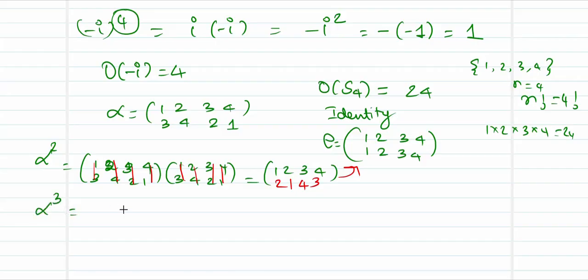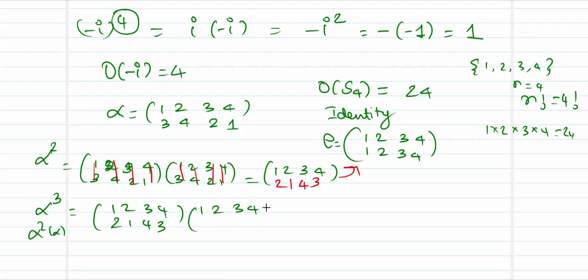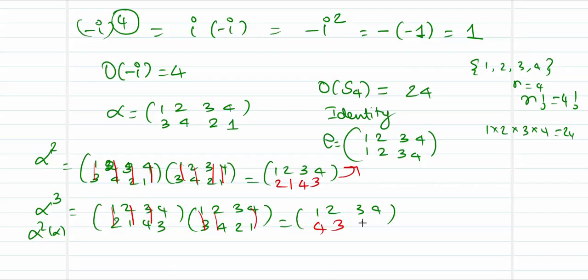α³ = α² composed with α. α² maps (1,2,3,4) to (2,1,4,3). Composing with α — (1,2,3,4)→(3,4,2,1): 1→2→4, 2→1→3, 3→4→1, 4→3→2. So α³ maps (1,2,3,4) to (4,3,1,2). This is still not the identity mapping.